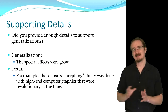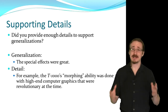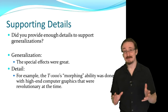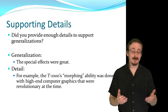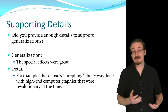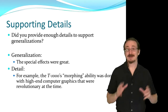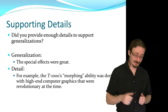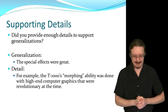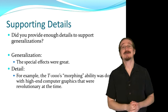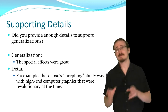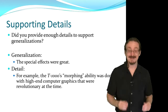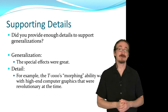You need to have details in the paper. The details you're providing are reasons to back up the generalizations you make. A generalization is something like 'the special effects were great.' I've made a claim, but it's a very general one — I haven't told you what kind of special effects were in the film, what was great about them, or described them in any way. It's okay to have general statements, but I have to support them with examples and supporting details. For instance: 'The special effects were great. For example, the T-1000's morphing ability was done with high-end computer graphics that were revolutionary at the time.' I could even elaborate more — talk about the type of computers, describe that morphing effect a little more. I always like to have lots of examples to support all my points.